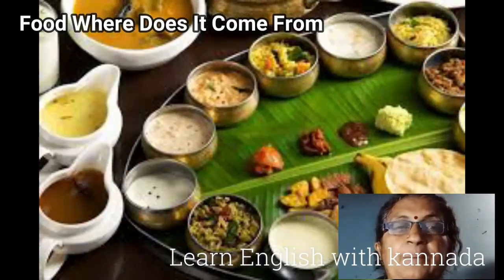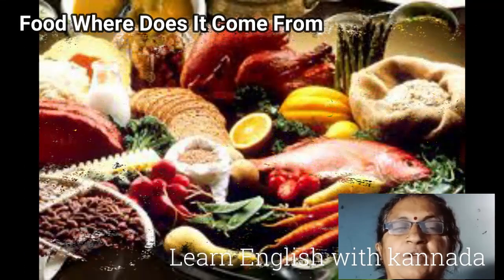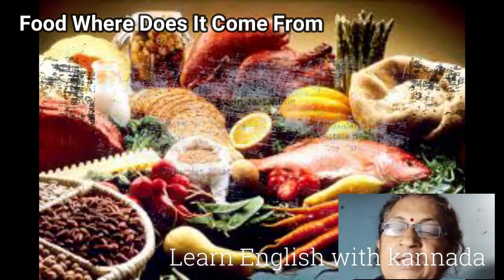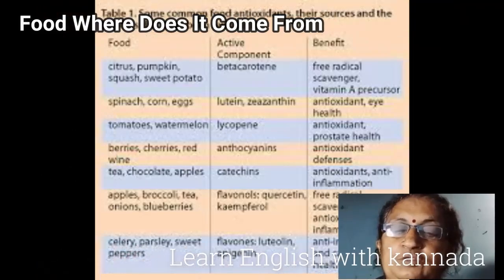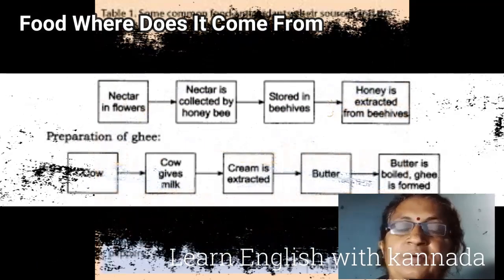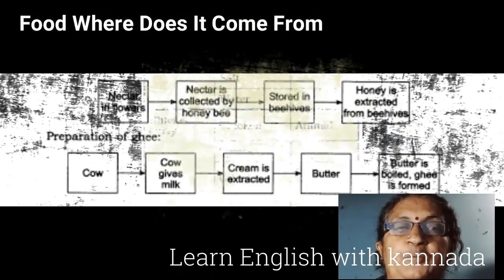We know that many people do not get different types of food — the typical type of food. What they like, they never get. They are very poor also, for other reasons they are very poor. That is why we have to produce large numbers of food products.